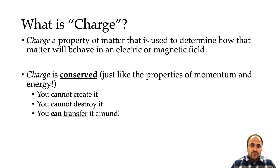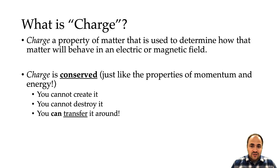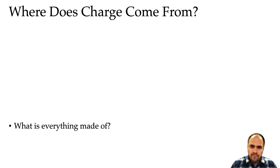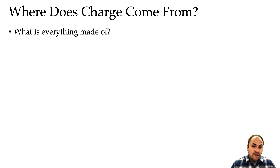So what exactly is charge? Charge is a property of matter that is used to determine how the matter will behave in an electric or magnetic field. Charge is a property, and just like other properties like momentum and energy, charge is conserved — so you can't create it, you can't destroy it, but you can transfer it around.